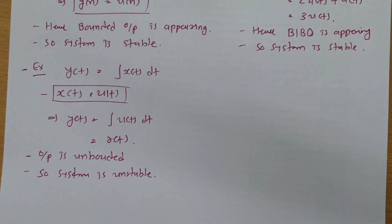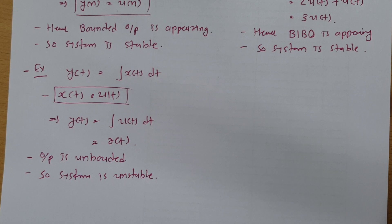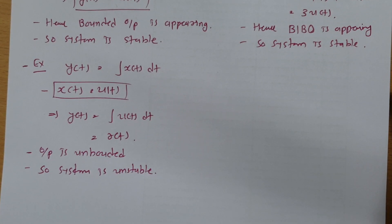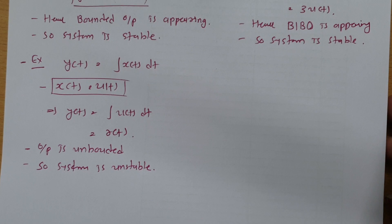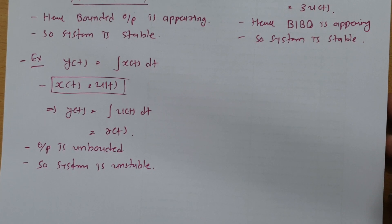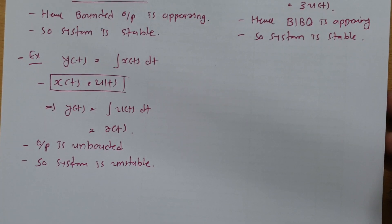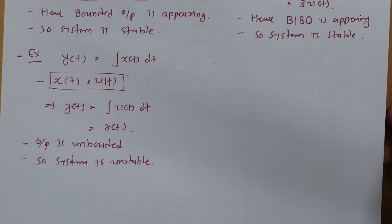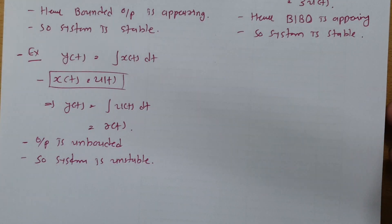There are many other ways by which we can identify whether a given system is stable or unstable. In control engineering I have covered many topics by which we can identify whether a given system is stable or not.